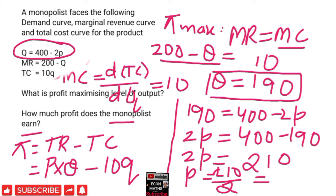210 divided by 2: two ones are two, two zeros are zero, two fives are ten. So the profit maximizing price, or equilibrium price, is equal to 105.